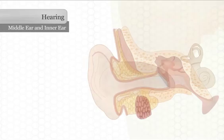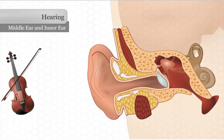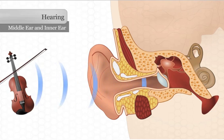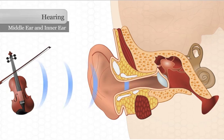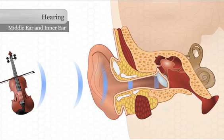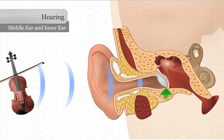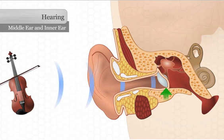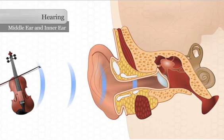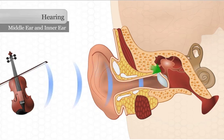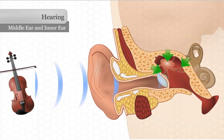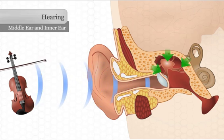When the funnel of the outer ear catches sound waves, the waves move down the ear canal toward the middle ear, which is the second part of the ear. The sound waves will cause the eardrum to vibrate. The movement of the eardrum causes three small bones in the middle ear to move. These bones are called the hammer, anvil, and stirrup. These are the three smallest bones in your entire body.